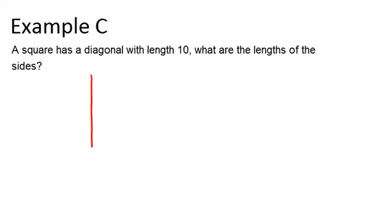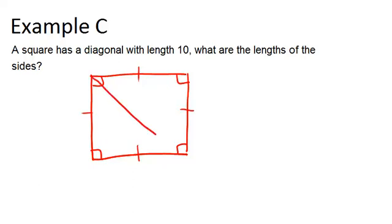Let's draw a square because it always helps to draw a picture and think about what we know. If it's a square all the angles are right angles all the sides are congruent and we have a diagonal drawn in which has a length of 10.